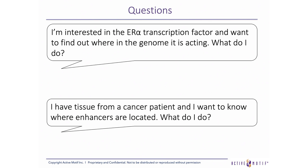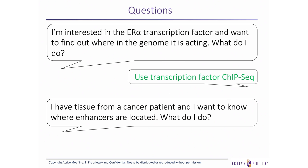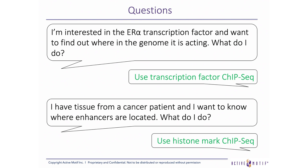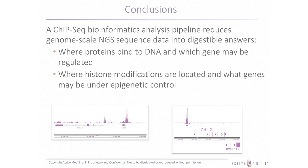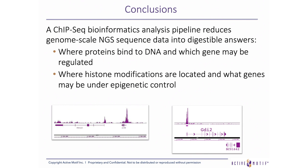At the beginning of this presentation, we posed a couple of questions that we will now review. If I'm interested in the ER-alpha transcription factor and want to find out where in the genome it is acting, I can use transcription factor ChIP-seq. If I have tissue from a cancer patient and want to know where enhancers are located, I can use histone-marked ChIP-seq. In conclusion, a ChIP-seq bioinformatics analysis pipeline reduces genome-scale next-generation sequence data into digestible answers to questions such as where proteins bind to DNA, which genes may be regulated, or where histone modifications are located and what genes may be under epigenetic control.